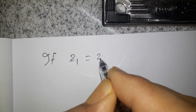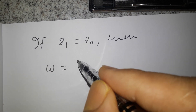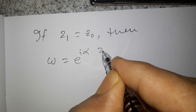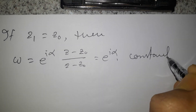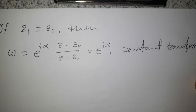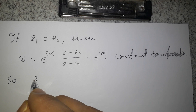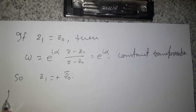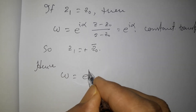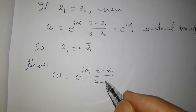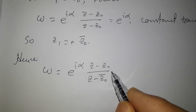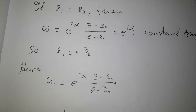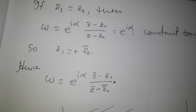If z₁ = z₀, then w = e^(iα) · (z - z₀)/(z - z₀) = e^(iα), which is a constant transformation. This cannot happen, so z₁ must equal -z̄₀, the conjugate with a sign change.